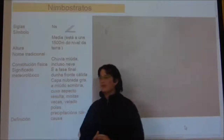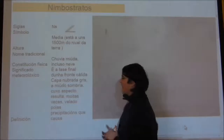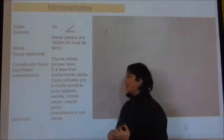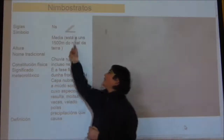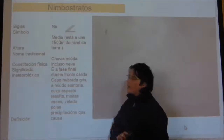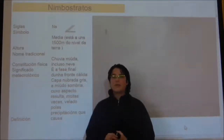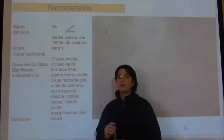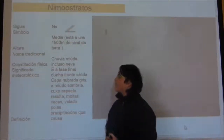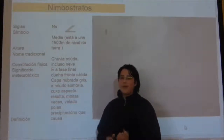Os Nimbostratus abrense por dentro de las gns, caracterizarse con este símbolo. Es una nube de altura media. Está a unos 1.500 metros sobre el nivel de terra. No tiene nombre popular.